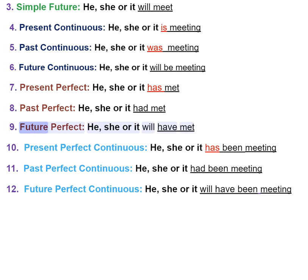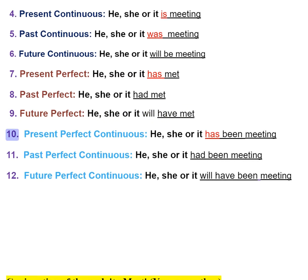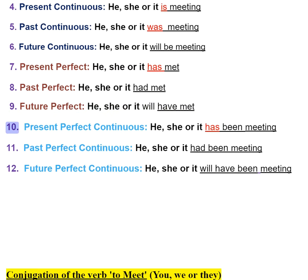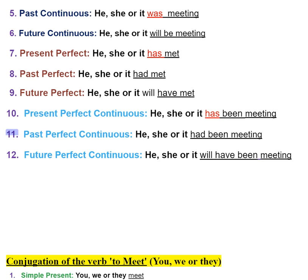9. Future perfect — he, she, or it will have met. 10. Present perfect continuous — he, she, or it has been meeting.